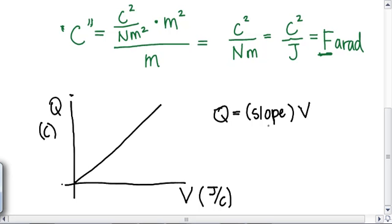And the slope of that line being constant is actually what we call the capacitance. So Q=CV or Q=VC. I don't care which one you call it.